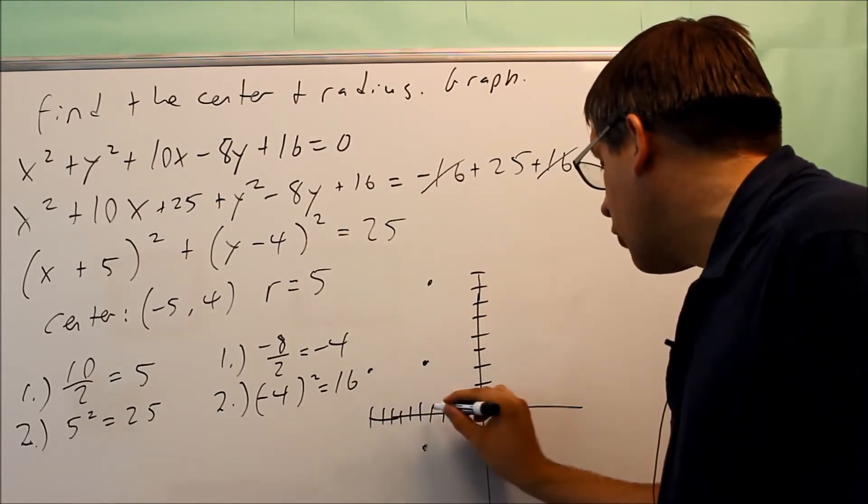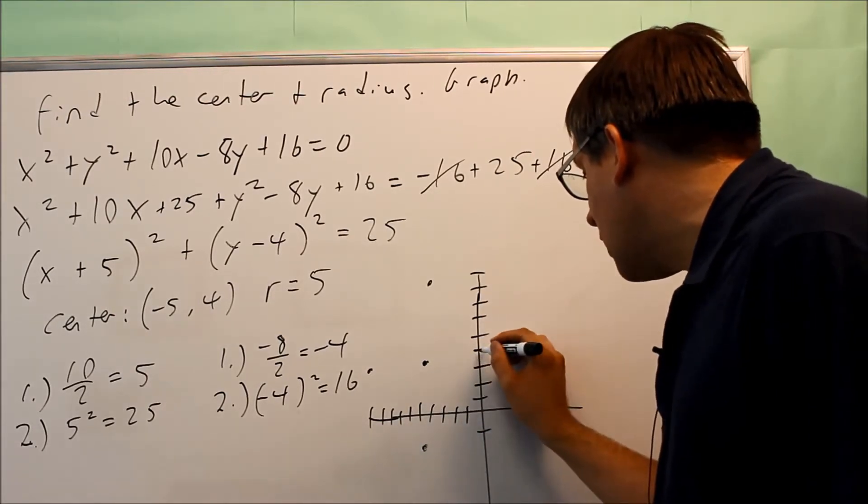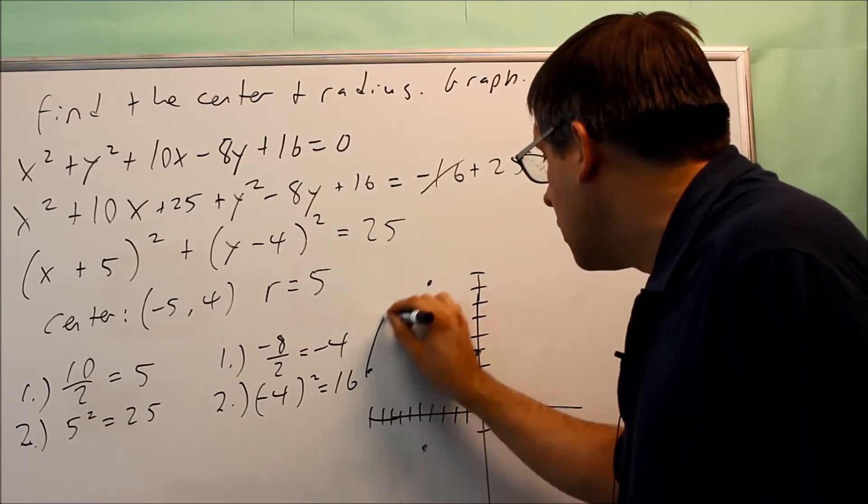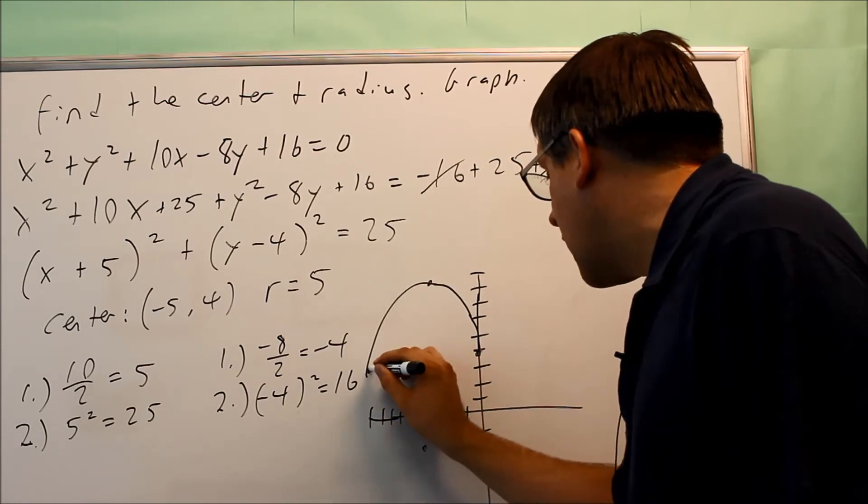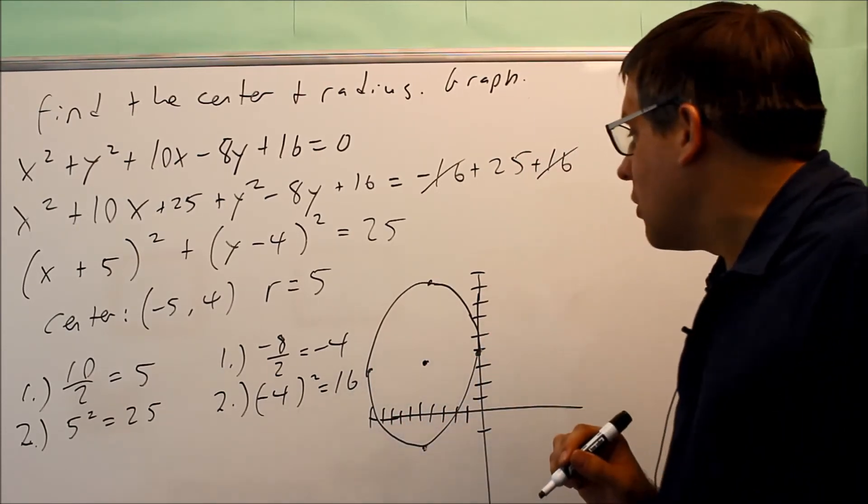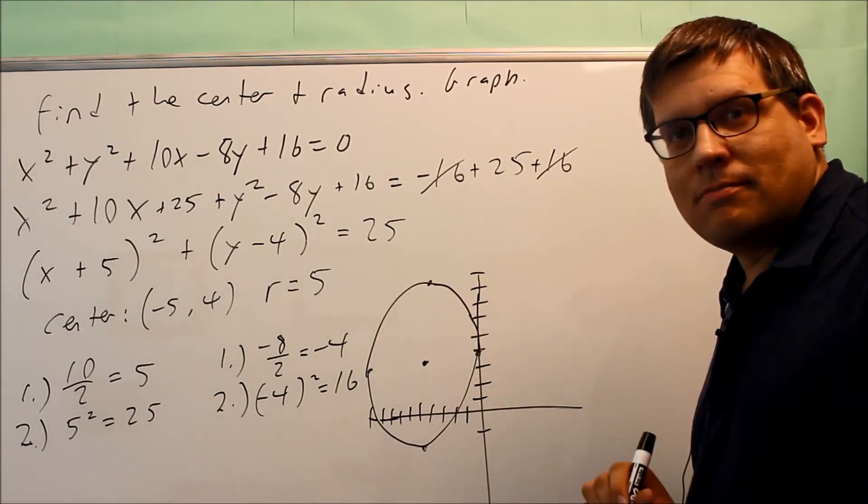And to the right 5, I'm going to go over 4 to here. And then I'm going to go one more over. Actually, this is already 5 here. So I'm going to get right on this axis is where the other dot is going to be. So this graph is actually tangent to the y-axis. And I'm going to draw this. And it looks like an egg, but it's really a circle. So this is going to be your completed graph.